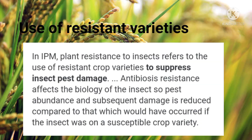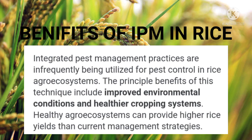Use of resistant varieties: in IPM, plant resistance to insects refers to the use of resistant crop varieties to suppress insect pest damage. Antibiosis resistance affects the biology of the insect so pest abundance and subsequent damage is reduced, compared to that which would have occurred with a susceptible crop variety.